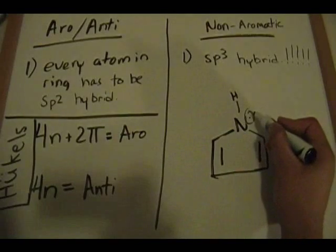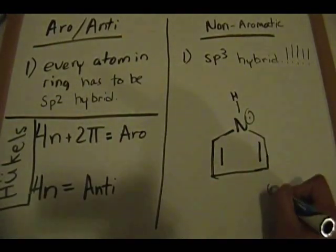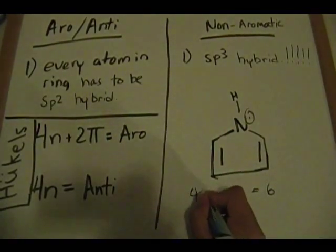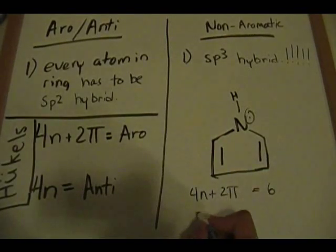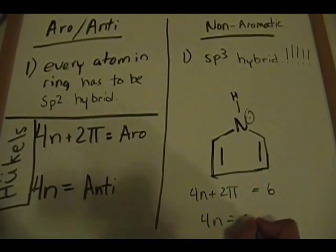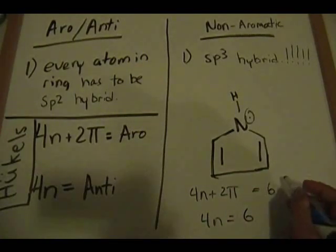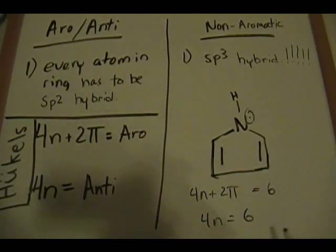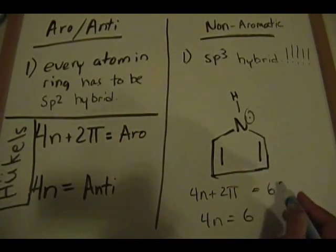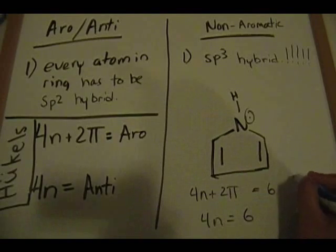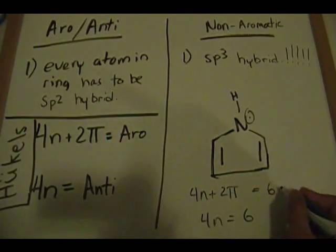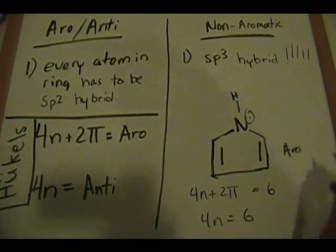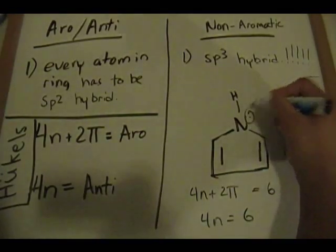So we have 2, 4, 6 — six pi electrons. Setting that equal to 4n + 2: 4n equals 4, so we plug in n = 1, giving 4 + 2 = 6. This is aromatic. That lone pair right there contributes to the aromaticity.